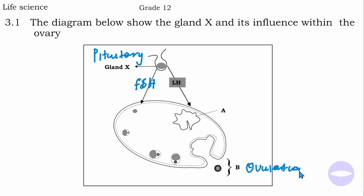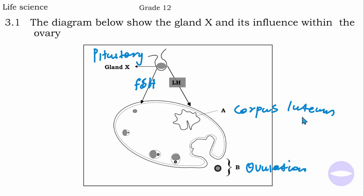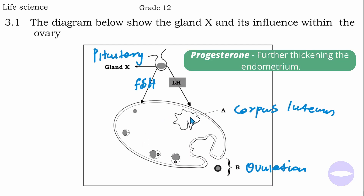After ovulation, the follicle will tend to become a corpus luteum. LH is responsible for converting this ruptured follicle into corpus luteum — so part A is corpus luteum. This is a brief explanation of the menstrual cycle inside the ovary. The corpus luteum will secrete progesterone, and progesterone is the one that further thickens the endometrium.